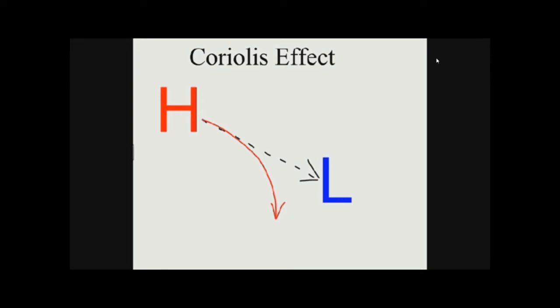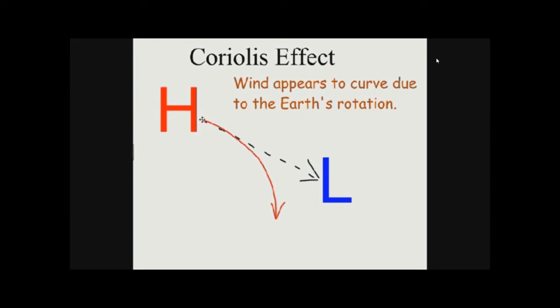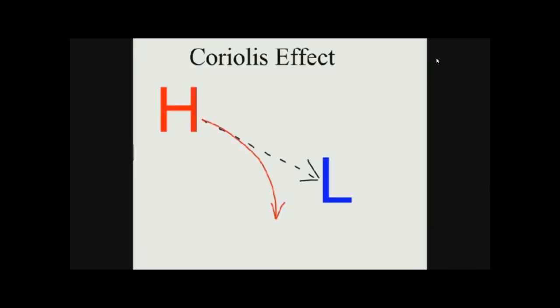A definition for your notes: the wind appears to curve due to the earth's rotation. This curve happens because the earth is spinning. If the earth wasn't spinning, the wind would move straight from high pressure to low pressure — we wouldn't have this apparent curve.